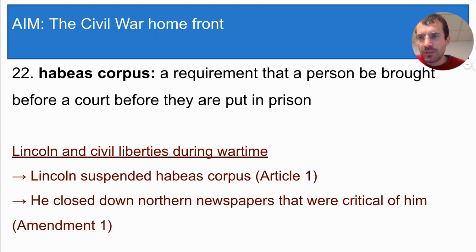Without habeas corpus, citizens could be held in prison before trial. Lincoln used this power to detain people who spoke out in favor of the Confederacy, and he justified his decision by arguing that those people were dangerous and threatened the war effort. Lincoln also took away Americans' First Amendment rights to free speech and freedom of the press by closing down newspapers in the North that were critical of him. So Lincoln went after dissenters — people that spoke against the government — by taking away the right of habeas corpus and by limiting what newspapers were allowed to publish.